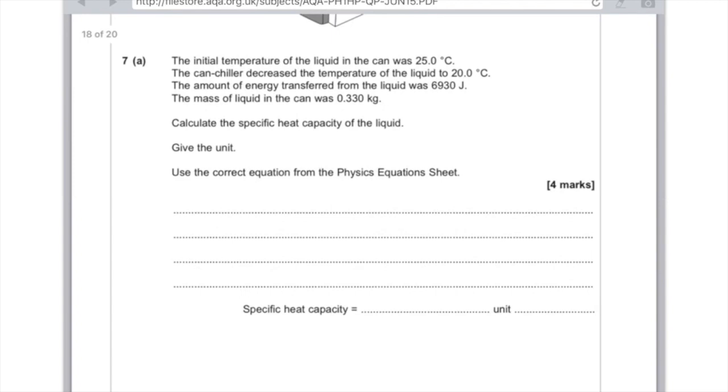This is the equation from the physics sheet, which is E for energy equals mass times specific heat capacity times temperature change. So we're looking for the specific heat capacity, so that's going to be C.